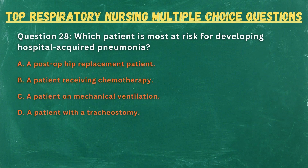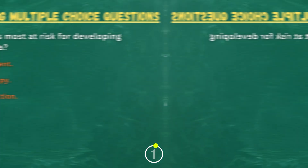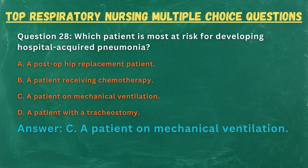Question 28. Which patient is most at risk for developing hospital-acquired pneumonia? A. A post-op hip replacement patient. B. A patient receiving chemotherapy. C. A patient on mechanical ventilation. D. A patient with a tracheostomy. Answer: C. A patient on mechanical ventilation.